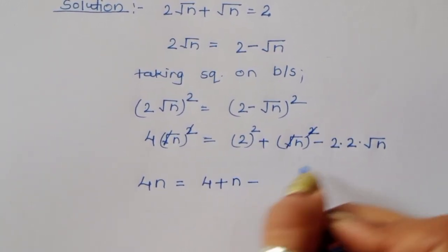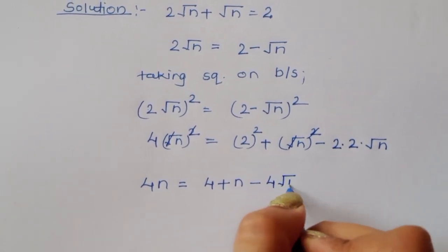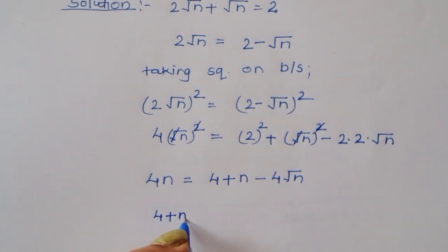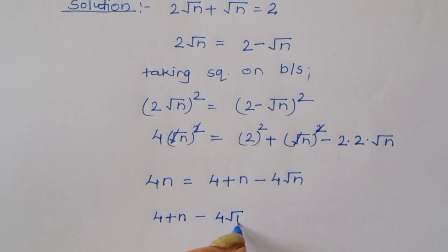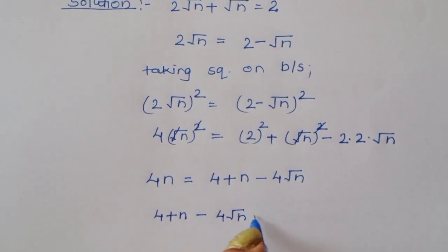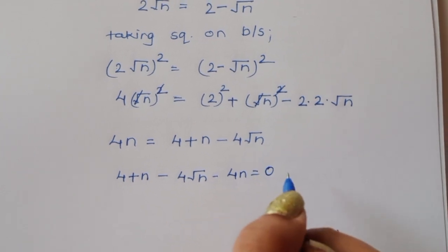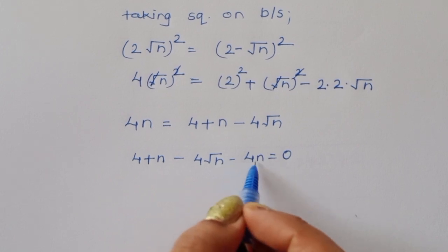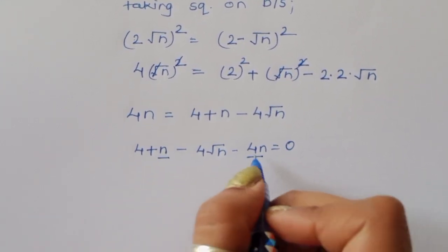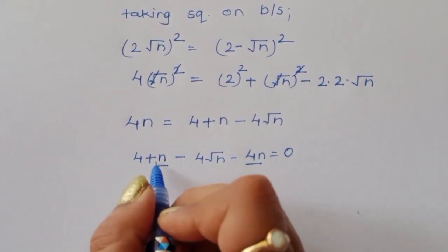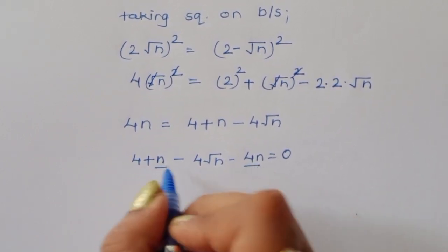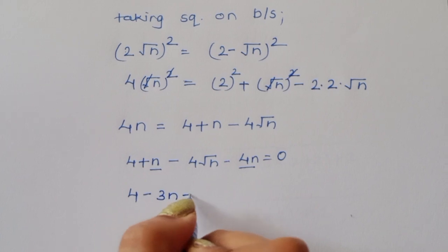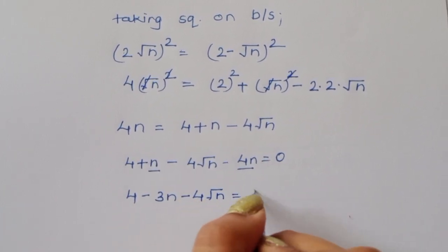So 4n is equal to 4 plus n minus 4 square root of n. Now here we have 4n on the left and n on the right, so 4n minus n gives minus 3n. Therefore: 4 minus 3n minus 4 square root of n is equal to 0.